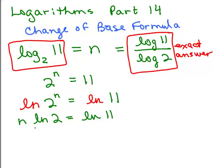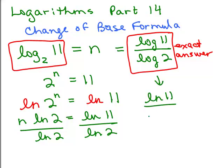Then I'll have n times the natural log of 2 equals natural log of 11, natural log of 11. And again, remember, natural log of 2 is just a number, so I'm just dividing both sides by the natural log of 2.